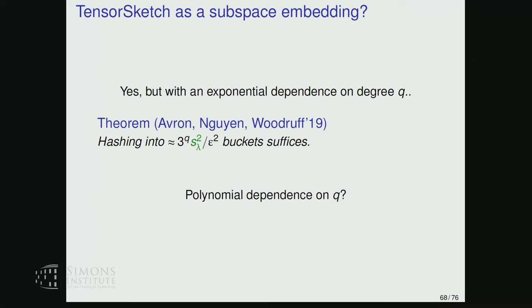This tensorized sketch does give a subspace embedding for the degree-q polynomial kernel (Avron, Guyan, Woodruff 2019), and one can extend to higher tensor powers using FFT. However, the dependence on the degree is exponential: you need 3^q times the statistical dimension squared buckets. This is sharp.